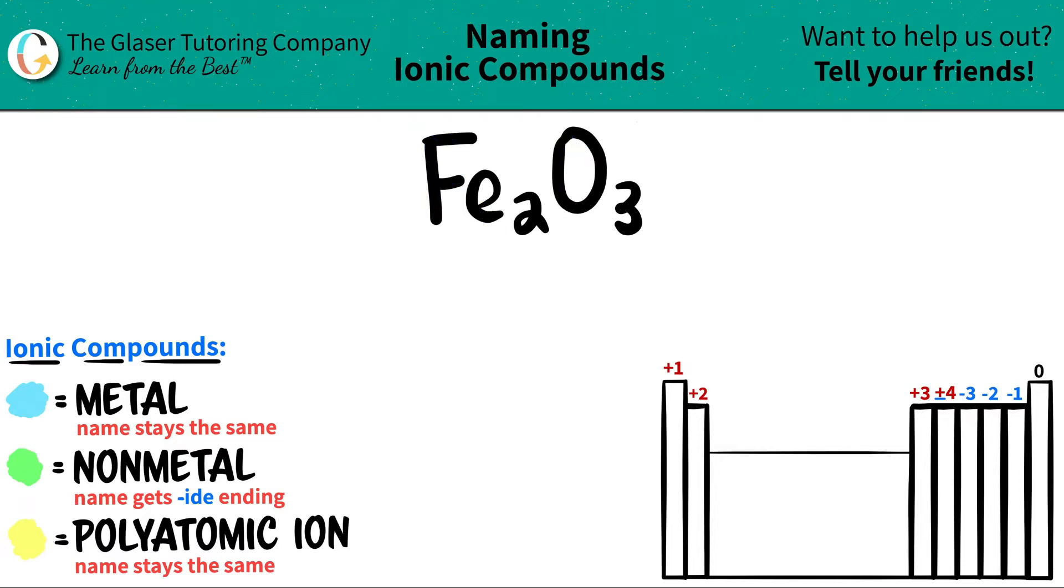Let's just plot out where they are in the periodic table. Now iron is over here in the periodic table. All of this block are metals. So iron is a metal, and then oxygen is a non-metal because it's over here on the periodic table. That's where our non-metals live.